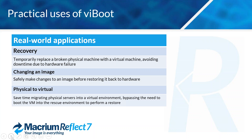Some of the real-world applications are: recovery — temporarily replacing a broken physical machine with a virtual machine, avoiding downtime due to hardware failure. Also, changing an image — safely making changes to an image before restoring it back to hardware, where you can literally boot into the image to make those changes. And physical to virtual migration — saving time migrating physical servers into a virtual environment, bypassing the need to boot into a rescue environment to perform a restore, which speeds up the process.